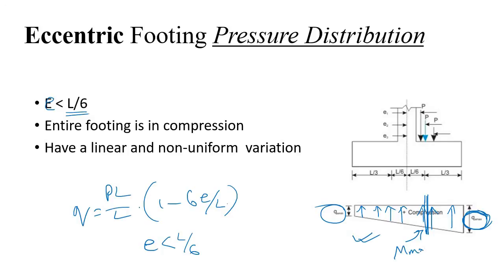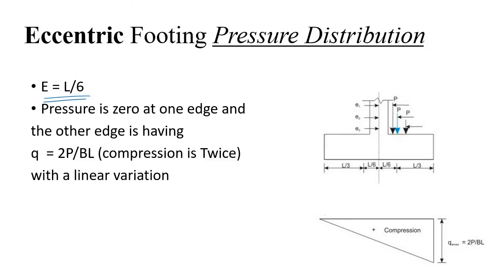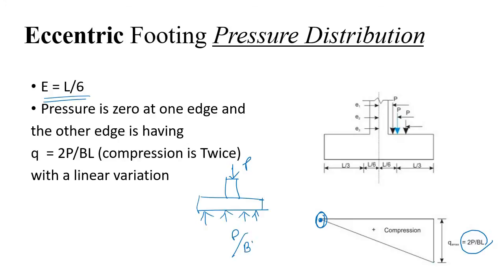If e equals L/6, the pressure at the left edge becomes zero while the pressure at the right edge is 2P/BL. Compare this to a concentrically loaded footing of the same P and area BL, which gives a uniform pressure of P/BL. Due to eccentricity e = L/6, we get twice the pressure on one side and zero on the other — an interesting result.